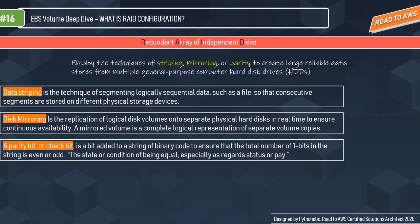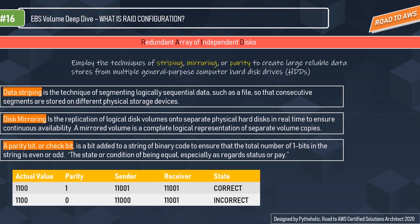For example, if the actual value is 1100 and we add a parity bit of 1, the sender sends 11001. If the receiver also receives 11001, the information is correct. But if the actual value is 1100 with parity 0 — sender sends 11000 — and the receiver gets 11001, there's a mismatch, indicating incorrect data. This is how parity bits are used for error detection and measuring data equality.